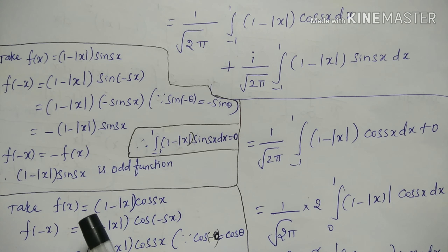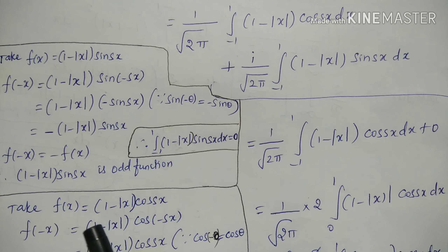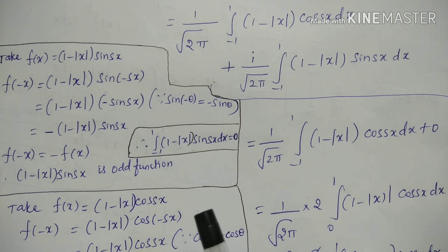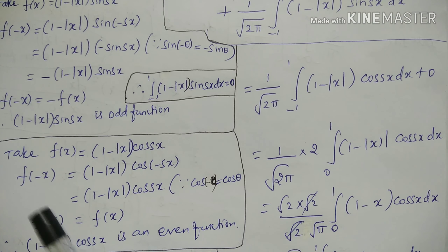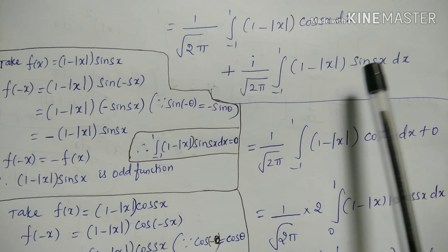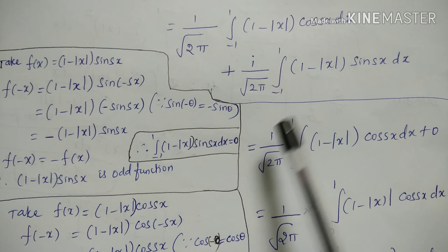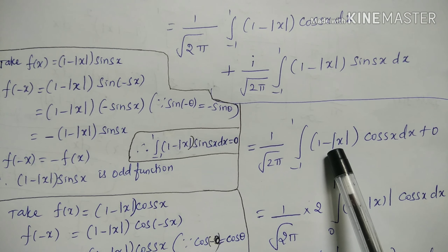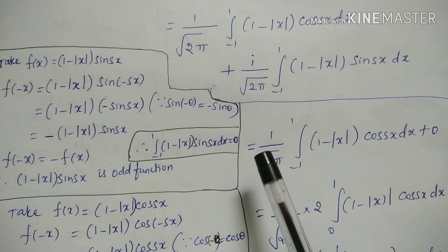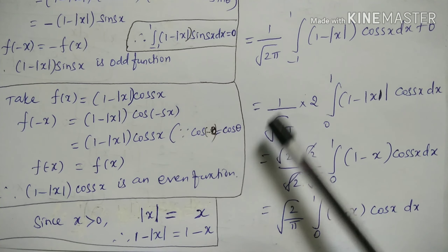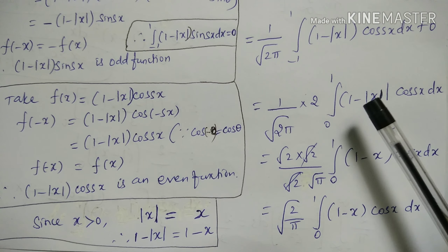Next, we check (1 − |x|)·cos(sx). Taking f(x) = (1 − |x|)·cos(sx) and substituting x = −x: f(−x) = (1 − |x|)·cos(−sx) = (1 − |x|)·cos(sx) = f(x), since cos(−θ) = cos θ. Therefore (1 − |x|)·cos(sx) is an even function.